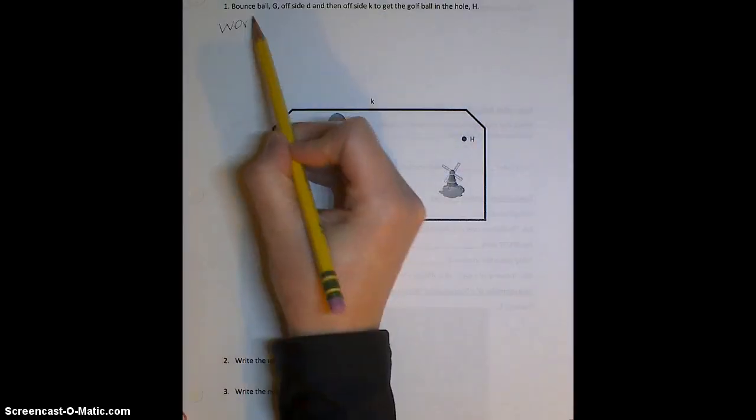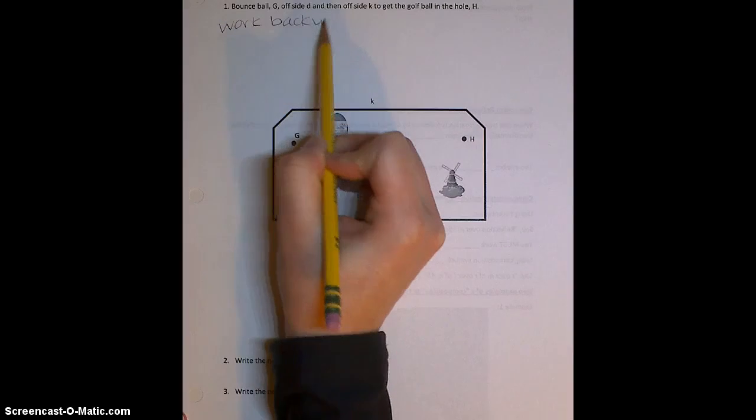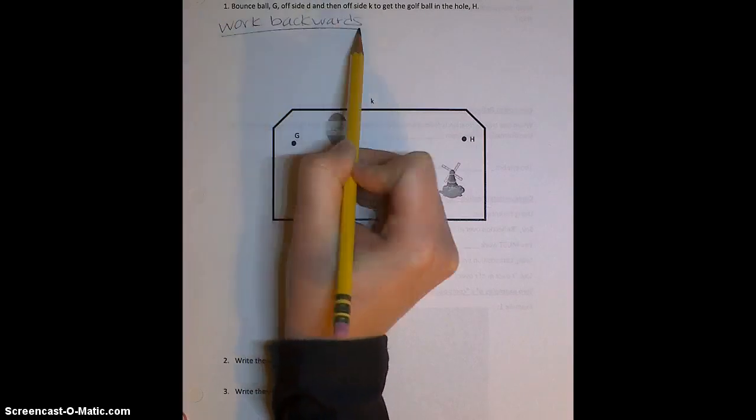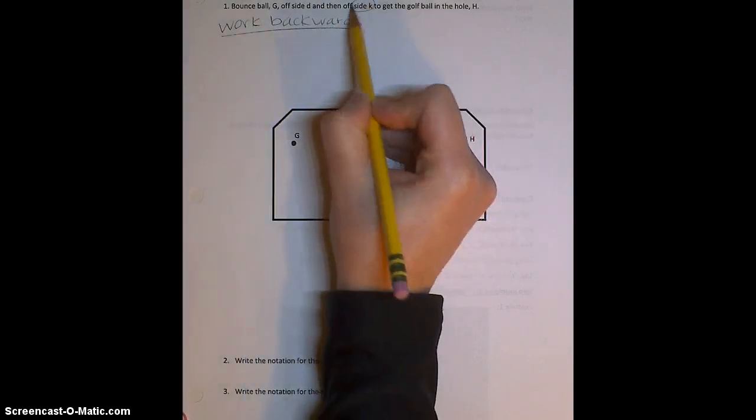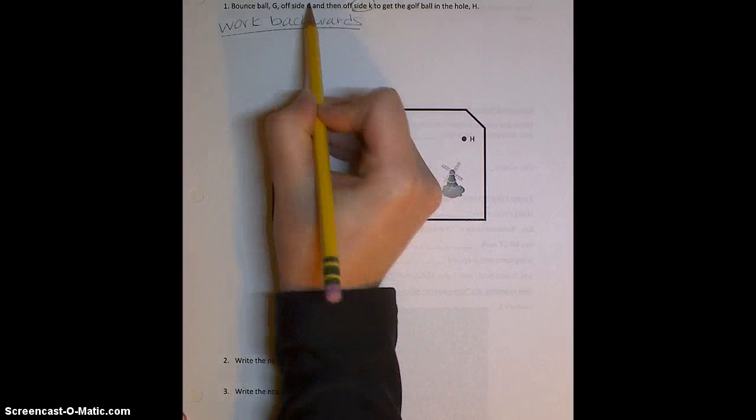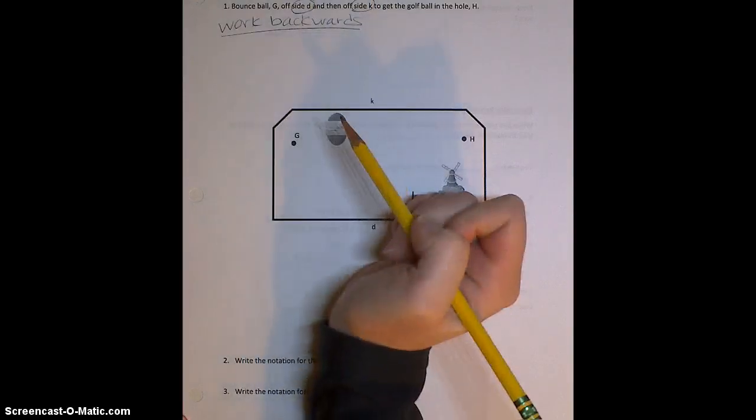Well, we know that we always have to work backwards when we're doing these problems. So that means I need to reflect over the side K first, then side D second.